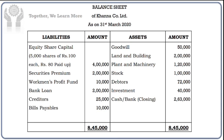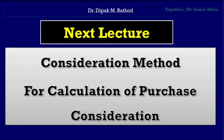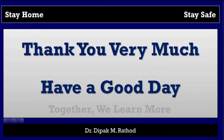This is how you can solve the practical example of accounts of business purchase. For regular understanding, kindly watch the previous session. In the next session, we will do the consideration method for calculation of purchase consideration. All examples are based on new goodwill being given, so calculate purchase consideration with the help of the net asset method. Till then, stay at home, stay safe. Together we will learn more and more. Thank you very much. Have a good day. Jai Jai Bharat.